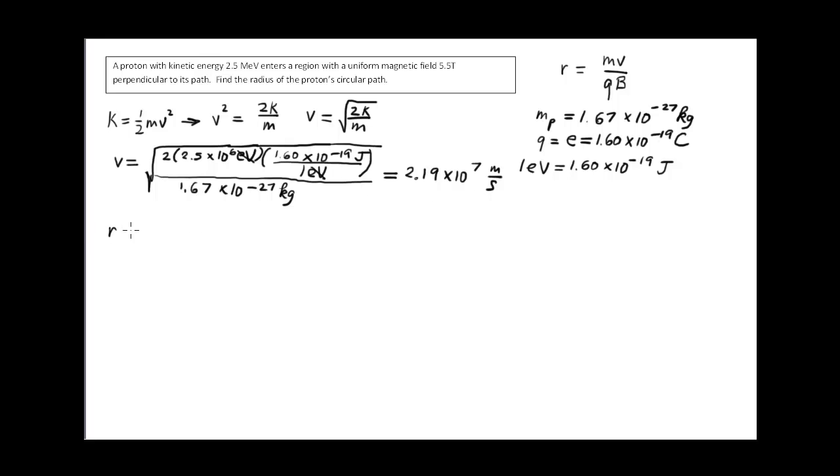Now we're ready to substitute directly into the radius equation. The radius is 1.67 times 10 to the minus 27 kilograms, multiplied by the speed, 2.19 times 10 to the seventh meters per second. And we're dividing by the product of the charge in the magnetic field. So we've got 1.60 times 10 to the minus 19 coulombs. The international system unit for magnetic field is Tesla, and so that'll turn out to be 5.5 Tesla. When we substitute in for what a Tesla is, we'll see that the units for this expression work out to be as they should be. For radius, they work out to be meters. When the smoke clears, we get 4.2 times 10 to the minus 2 meters, which would be 4.2 centimeters.